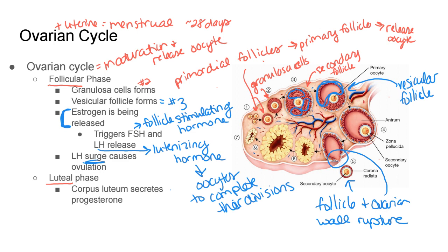This is all part of the ovarian cycle, and this is just one portion of it — the follicular phase, which is the maturation of the follicle. So from primordial follicles, to the primary follicle with thickening of the granulosa cells, to the secondary follicle, to the vesicular follicle. Then we get the hormone changes which start causing the oocytes to finish their division, with estrogen signaling the pituitary to release FSH and LH, so that ovulation occurs and the egg is released.